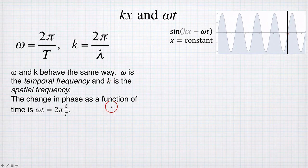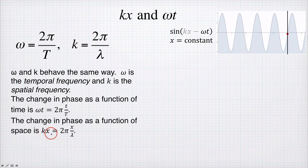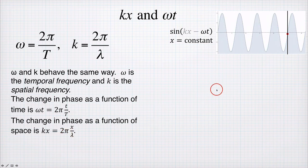We can do the same trick to interpret the change in phase as a function of space. So kx is 2π times x divided by lambda. So the distance x divided by lambda is the number of wavelengths. We take that number of wavelengths and multiply it by 2π to get a number of radians.